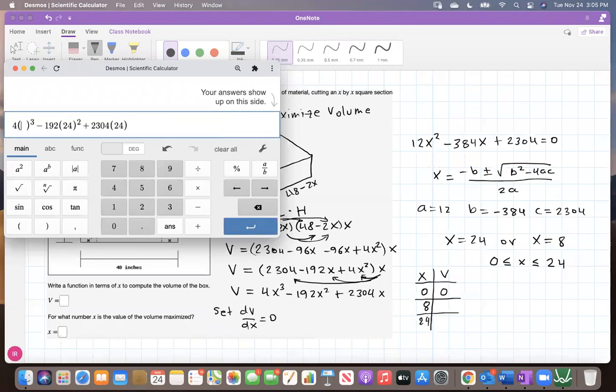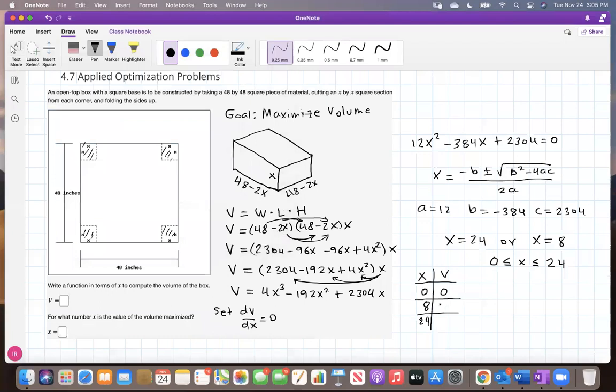All right, so the one we take then is the one that makes sense is this. Eight thousand, one hundred and ninety-two. And this should be in here, max. Because this is zero, so clearly this is where the maximum happens. So X has to be equal to eight in order to maximize the volume. For X equal eight, volume is maximized. And here you have the function that represents your volume.